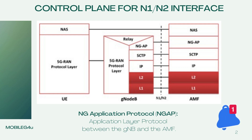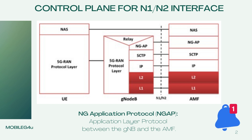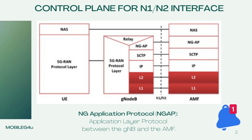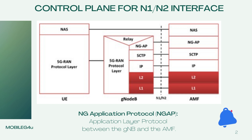Let's discuss the NGAP protocol in 5G. Here we have the UE, and the 5G RAN protocol layers include physical, MAC, RLC, SDAP, RRC, and then the NAS layer. On the gNodeB, the left part is talking to the UE and the right part is talking to the AMF. Between gNodeB and AMF we have two interfaces: N1/N2. Here you can see the NGAP protocol in the control plane stack, which is used mainly for signaling.